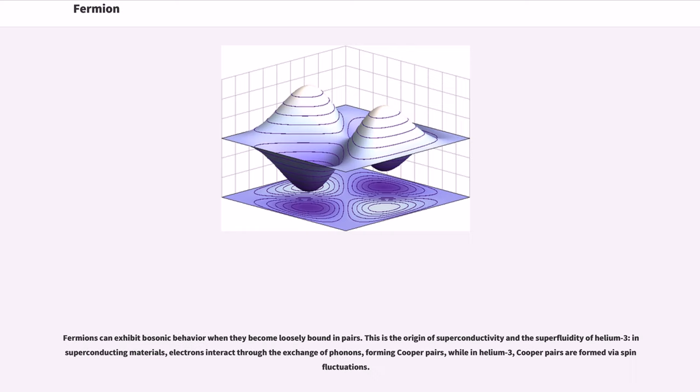Fermions can exhibit bosonic behavior when they become loosely bound in pairs. This is the origin of superconductivity and the superfluidity of helium-3. In superconducting materials, electrons interact through the exchange of phonons, forming Cooper pairs, while in helium-3, Cooper pairs are formed via spin fluctuations.